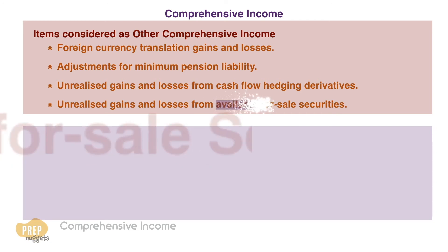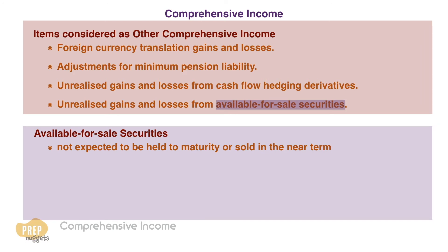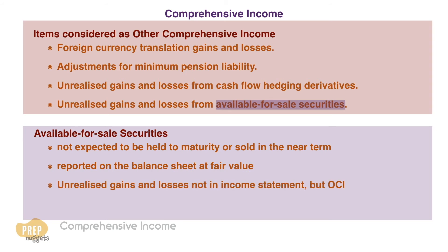Available for sale securities are investment securities that are not expected to be held to maturity or sold in the near term. They are reported on the balance sheet at fair value. The unrealised gains and losses are not reported in the income statement, but are reported directly in stockholders' equity as a component of other comprehensive income.